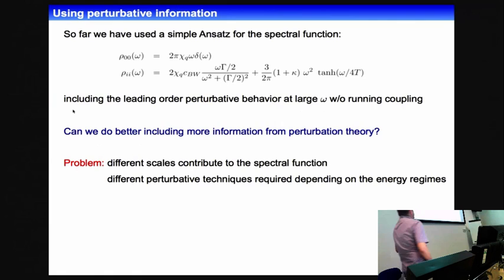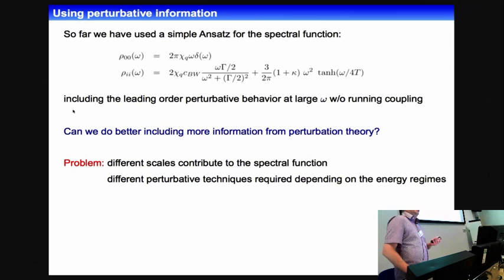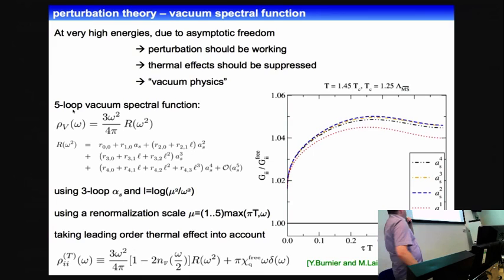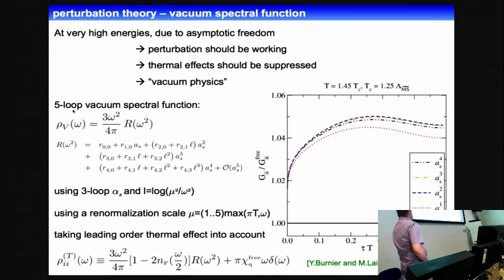We wanted to do even better by improving the omega-squared part, which was a leading-order perturbative contribution. We asked whether we could include more perturbative information and the effect of a running coupling. We looked into the vacuum perturbative spectral functions: at very high energies the temperature shouldn't matter and everything should be vacuum-like, so the spectral function is known up to five-loop order. We used three-loop running of the coupling — we also tried four-loop and five-loop but didn't see much difference.